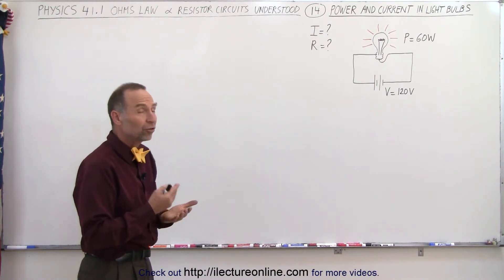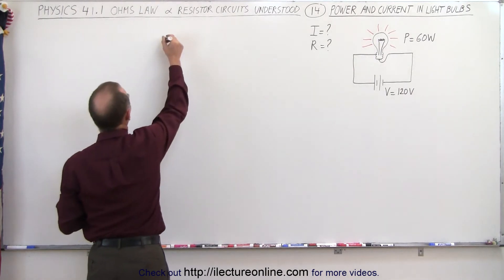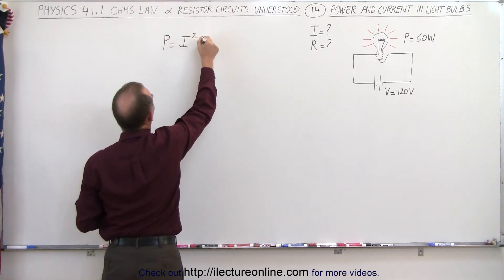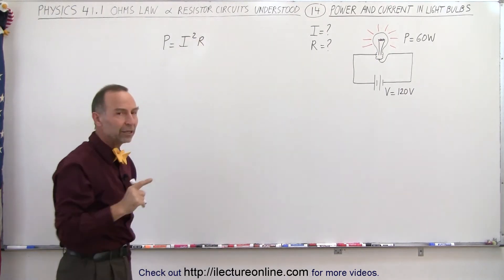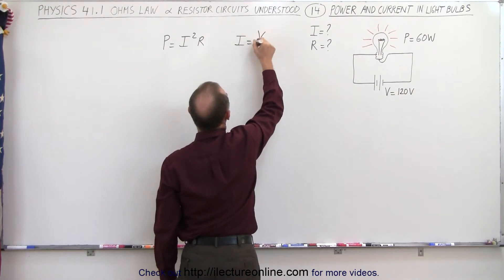Well, the way to do that is to start with the power equation since we're given the power of the light bulb and we know that the power P is equal to I squared R. Now if we use that in conjunction with Ohm's law that tells us that I is equal to V over R.